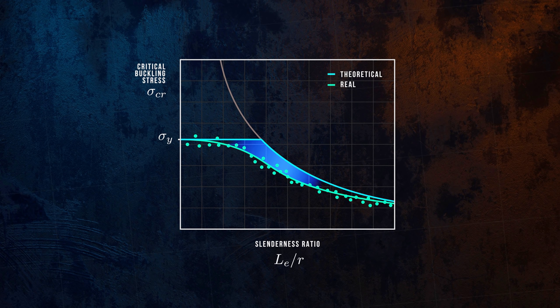One of these limitations is that the formula assumes that the applied load acts exactly through the centroid of the column cross section. But the applied load will always be slightly offset from the centroid, even if it's by only a very small amount. This eccentricity introduces a moment that acts in addition to the axial load, which reduces the critical buckling stress and significantly changes how buckling occurs.